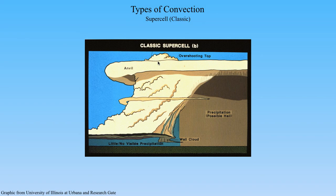The classic supercell typically has a wider updraft tower and a cloud base closer to the ground, so it doesn't form in especially dry environments, but still has strong vertical wind shear. This is more typical of what you find over the plains, where beneath the anvil you get a healthy mixture of both large hail and heavy downpours. The key with the classic supercell is that there's little to no precipitation in the updraft area — most precipitation is concentrated away from the updraft and beneath the anvil, well ahead of the updraft. These are usually the thunderstorms best suited for producing tornadoes, but can also produce straight-line winds and very large hail.